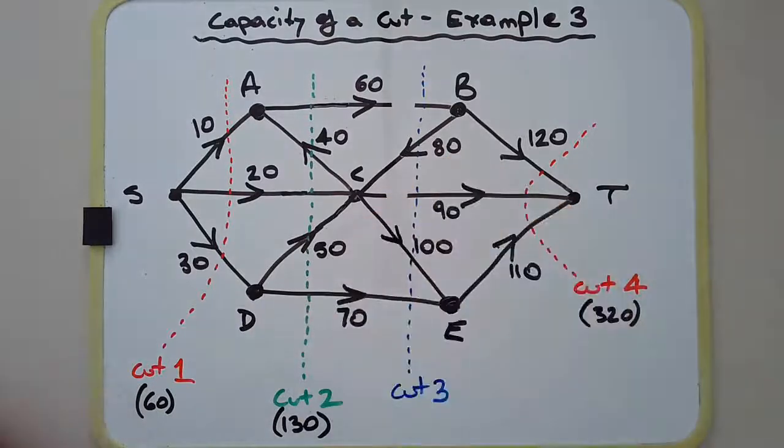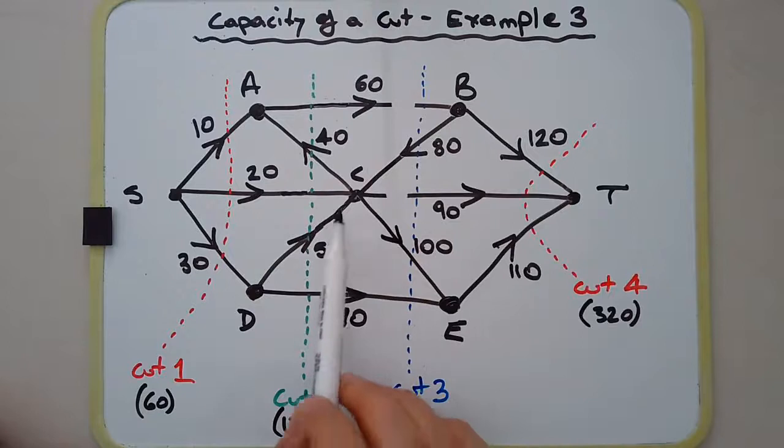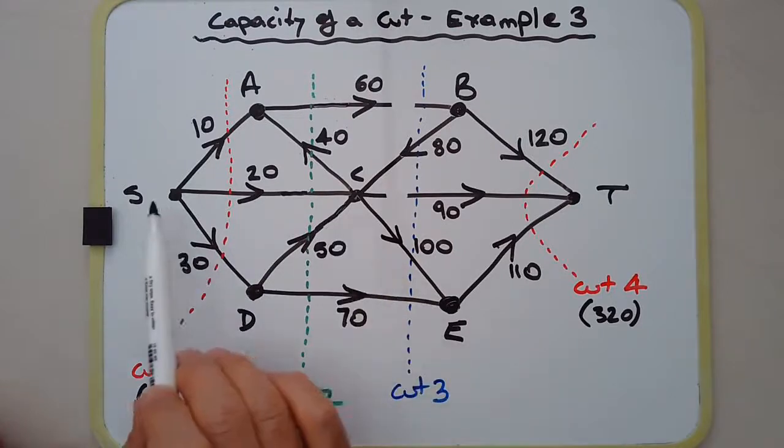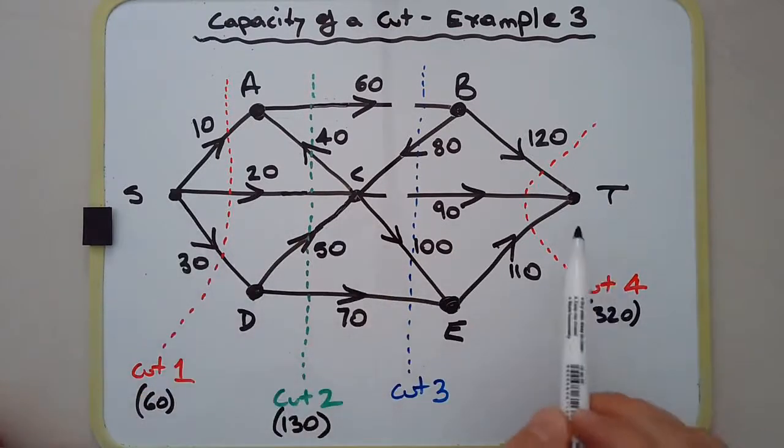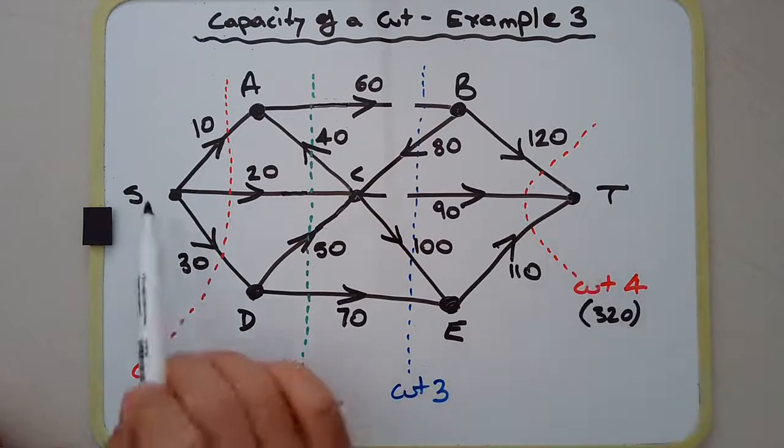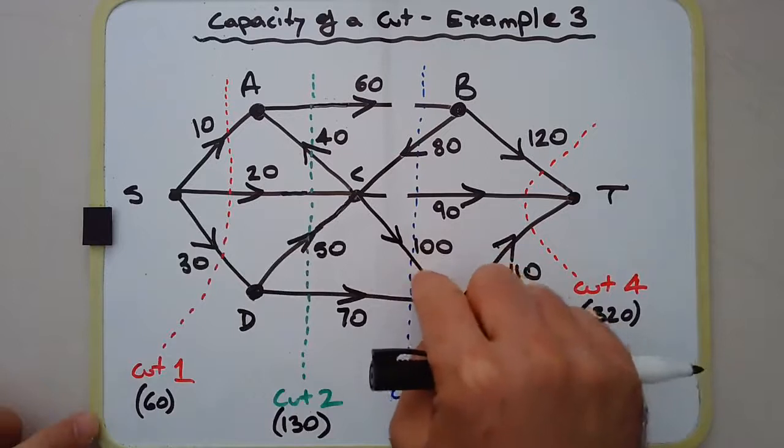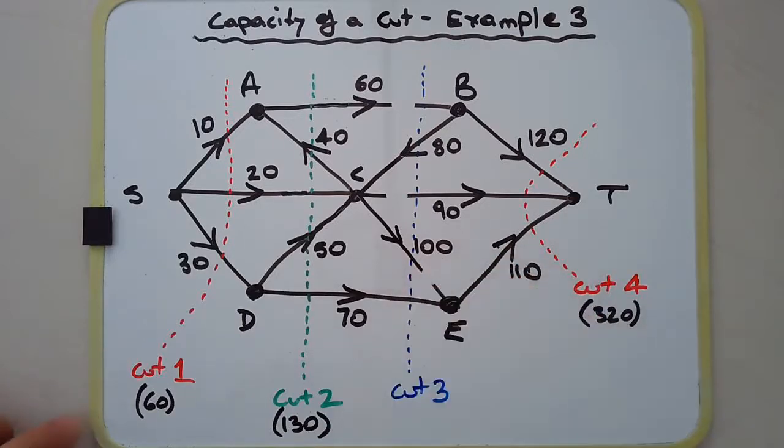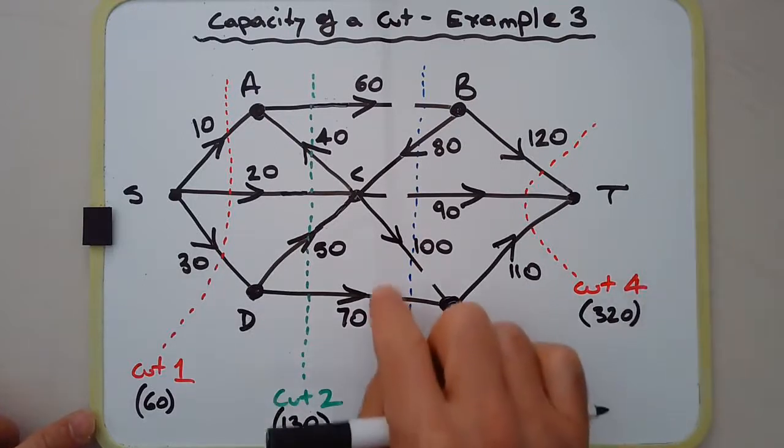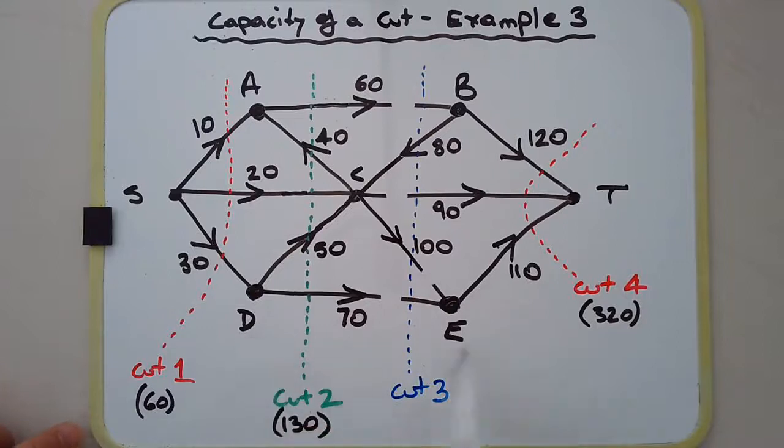And also CE has to be cut off as well, because we have a path to T: S-C-E-T. So we definitely have to cut that off there. And S-D-E-T—we definitely have to cut this edge DE as well. So adding them all up now, we've got 60.